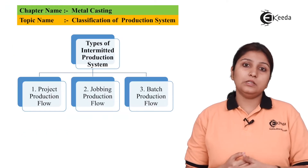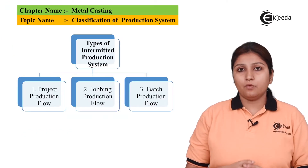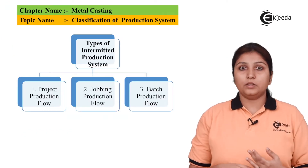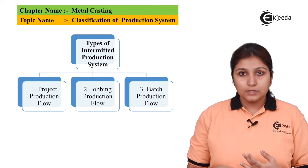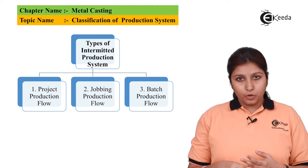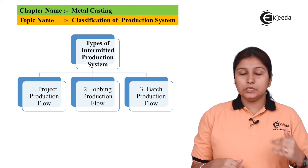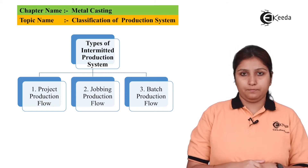There are three types of intermediate production systems: one is jobbing, second is project, and third is batch. We'll see them one by one.